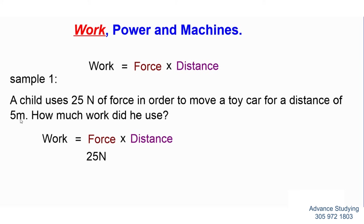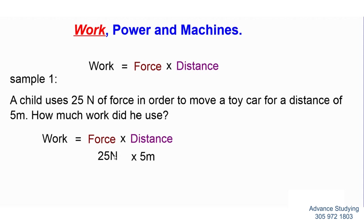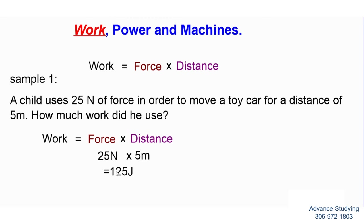So I have 25 newtons times 5 meters of distance. 25 times 5 gives you 125 joules. Therefore, the work that the child used to move the toy car for a distance of 5 meters was 125 joules. That's example 1.